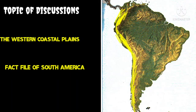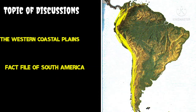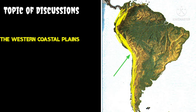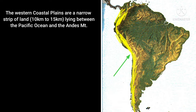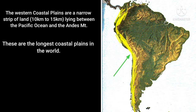We are going to discuss about the coastal plains of South America. Apart from that, we'll also be discussing some of the fact files of South America. As you all can see here, the portion which is marked with yellow color is the coastal plains of South America. So let's start with this.